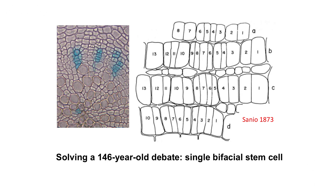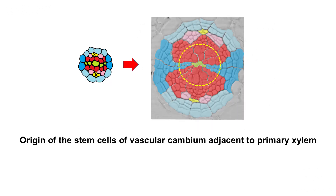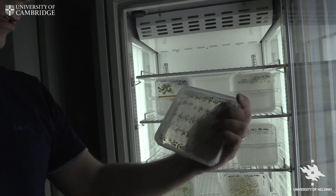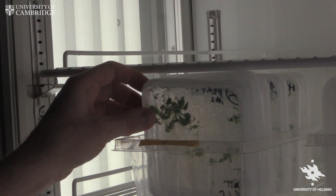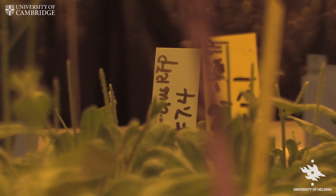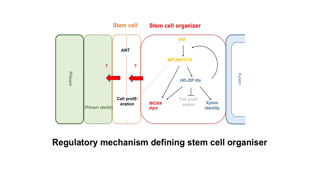In work published in Nature, we resolved a nearly 150-year-old debate on the origin of the vascular cambium. We also showed that when the vascular cambium is first established, its stem cells originate from the cells located adjacent to primary xylem. We thought that perhaps xylem precursors act as organizers that direct the formation of stem cells in adjacent cells, and we confirmed that that was indeed the case, also identifying a molecular regulatory mechanism that defines the stem cell organizer.